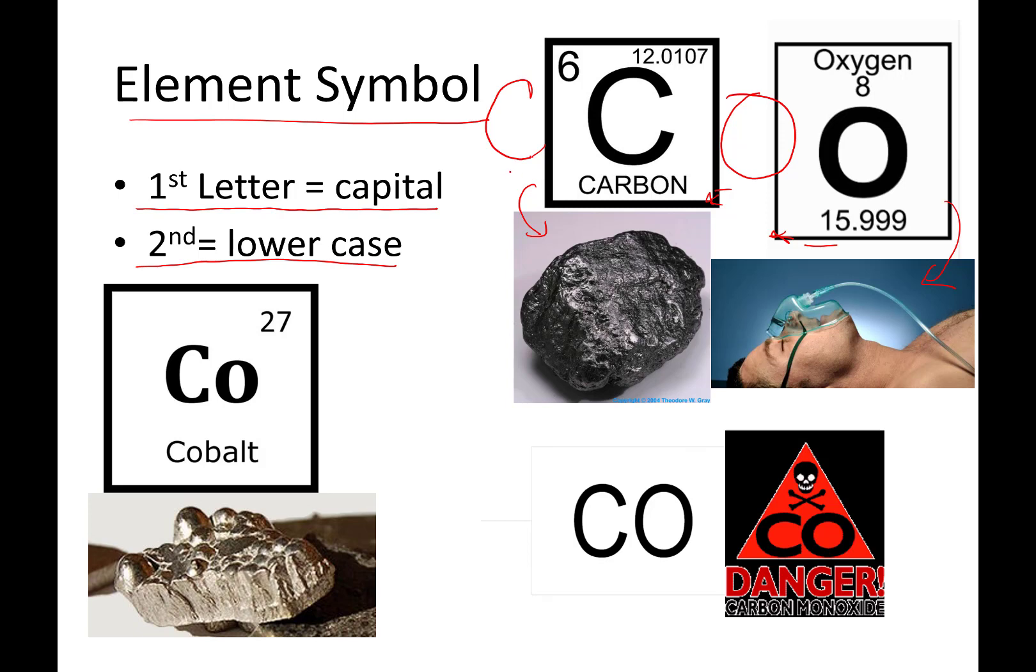If you put one capital O and one capital C together, you end up with a compound. And this is carbon monoxide. Carbon with one oxygen. Carbon monoxide is a dangerous poisonous gas that you get from incomplete combustion of a hydrocarbon. When there's not enough oxygen present for complete combustion to occur, someone gets overexposed to carbon monoxide, they will die of asphyxiation. It is a very bad thing.